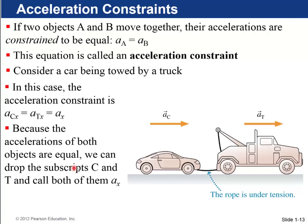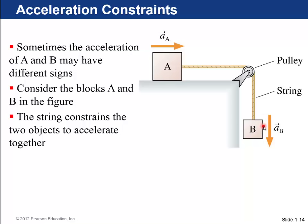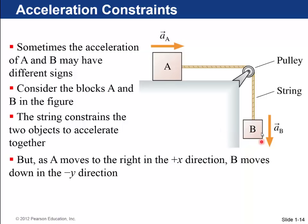Objects don't always accelerate in the same direction. If there's a pulley, the string stays the same length, constraining objects to accelerate together. If object B moves 1 meter down, object A must move 1 meter to the right — all derivatives are the same, so velocities and accelerations have equal magnitudes. Depending on how you define x and y coordinates, the key point is that the magnitude of acceleration is the same for both objects.